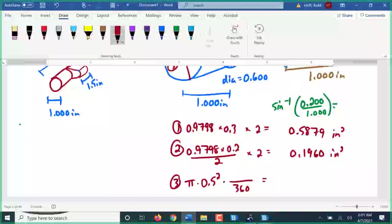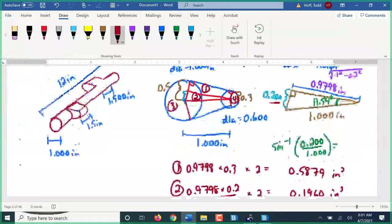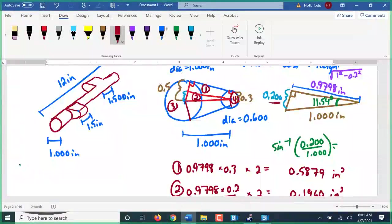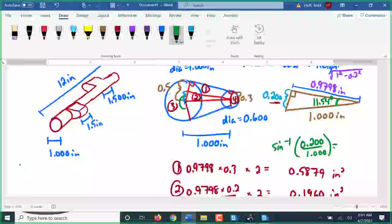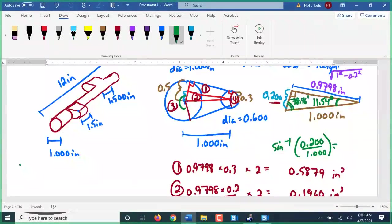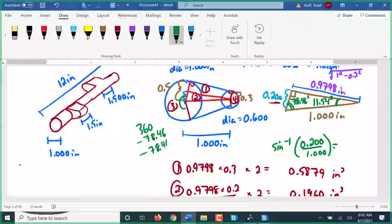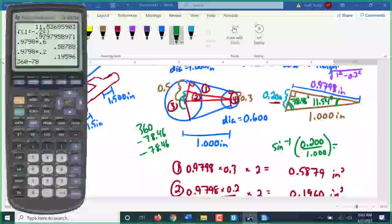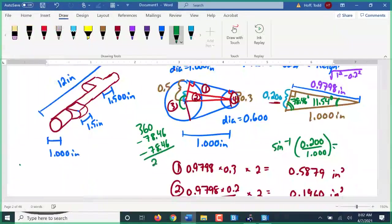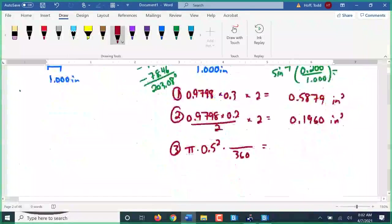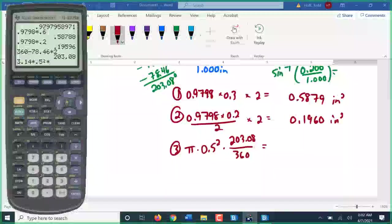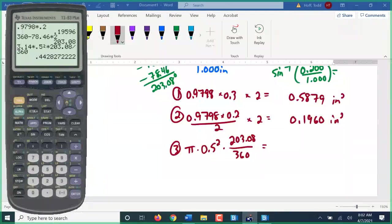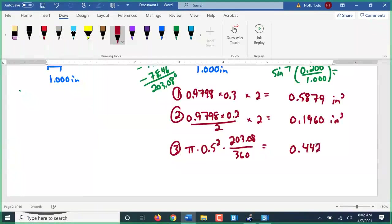Area 3 will be pi times 0.5 squared will be the area of the whole circle, times whatever this angle is here over 360. This is 11.54. This one is going to be 78.46. So this is 360 minus 78.46 twice. 203.08 degrees. 0.4428. There is only one of those, so we don't multiply that one by 2.